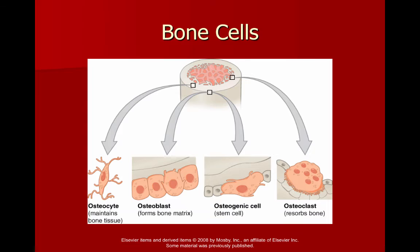An osteoblast is going to form new bone matrix. On the flip side, an osteoclast is resorbing bone — meaning this cell is actually dissolving or digesting bone. These cells are working all the time throughout your lifetime, constantly forming new bone and digesting old bone. Osteocytes fit into mature bone matrix and maintain it, and stem cells create all the other differentiated cells.